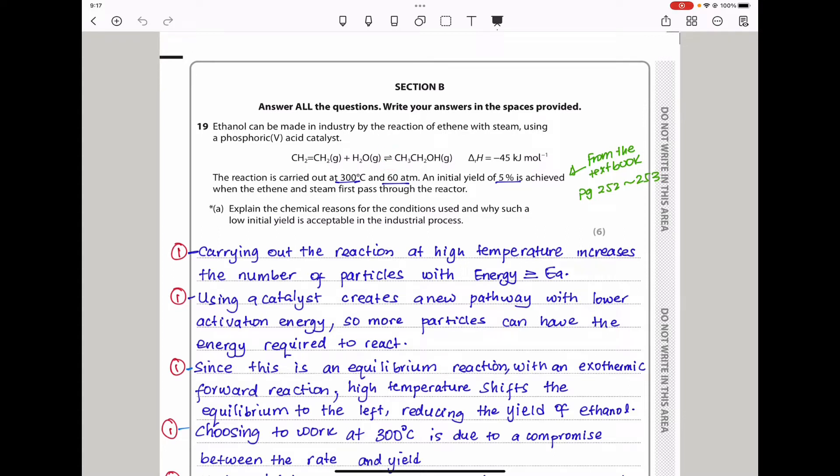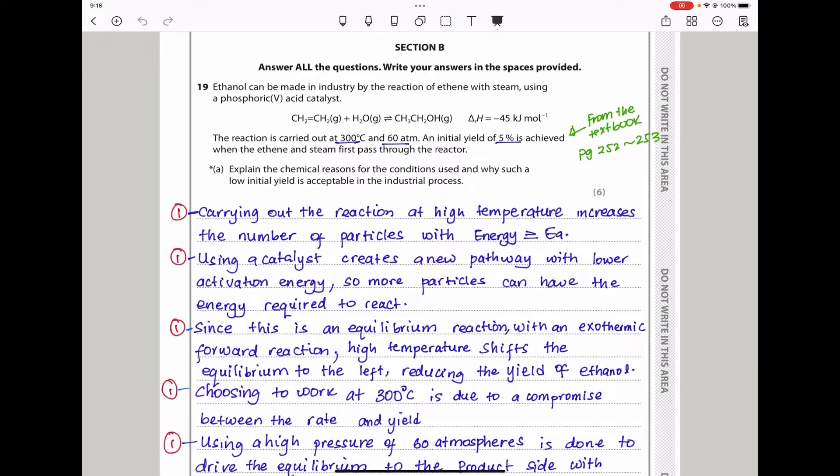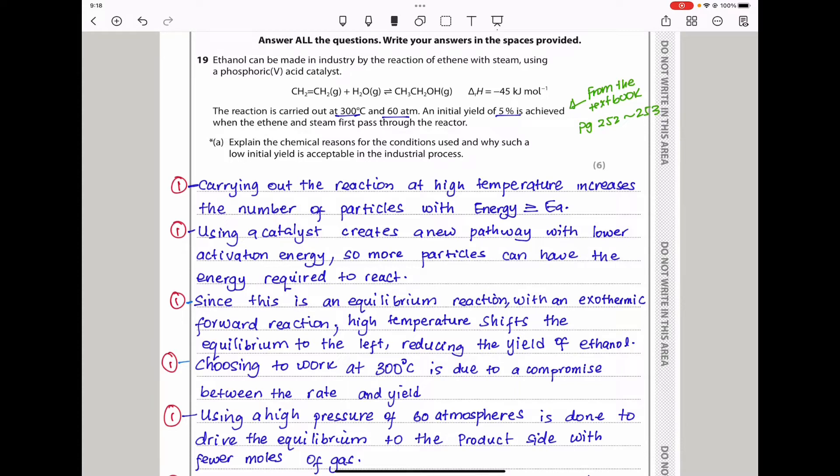Carrying out the reaction at high temperature increases the number of particles with energy equal to or greater than activation energy. When you carry out a reaction at higher temperature, you're going to have a higher rate of reaction. Using a catalyst creates a new pathway with lower activation energy, so more particles can have the energy required to react. Since this is an equilibrium reaction with an exothermic forward reaction, high temperature will shift equilibrium to the left, reducing the yield.